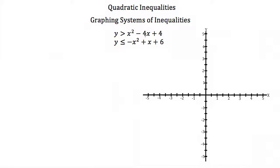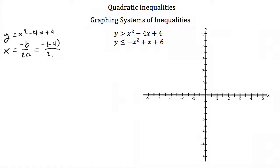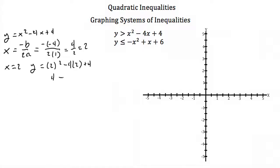We just graph these individually, so we'll do the first one. We pretend this is y equals x squared minus 4x plus 4. We find the axis of symmetry from x equals negative b over 2a. Plugging in b equals negative 4, we get negative negative 4 over 2 times 1, which is 4 over 2, or just 2. So our vertex has x coordinate 2. Plugging that in gives y equals 2 squared minus 4 times 2 plus 4, which equals 0. So again our vertex is at (2, 0).